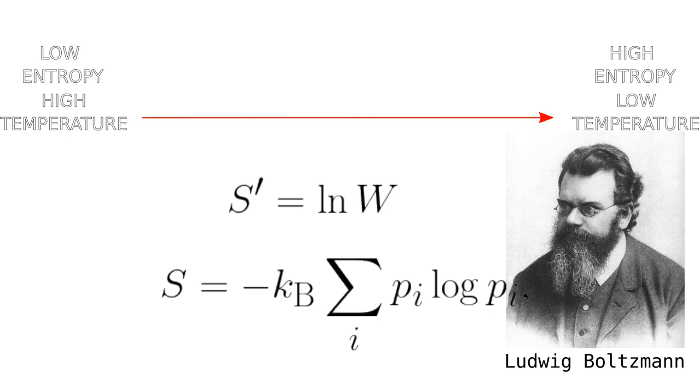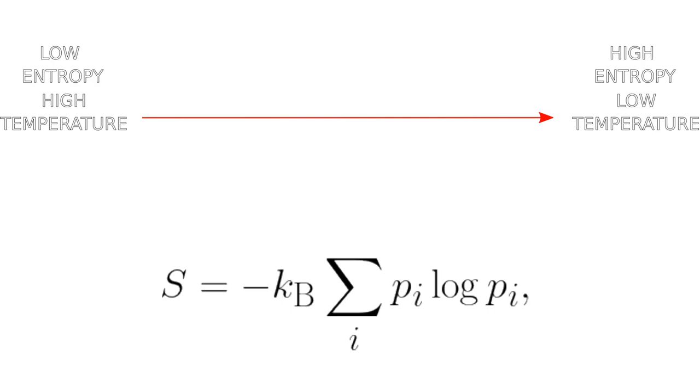For thermodynamics and its second law, the concept states that energy tends to flow from high temperature to low, that is from low entropy to high. Boltzmann's entropy formula is the probabilistic definition of this equation based off the number of states. In his case, corresponding to how the ideal gas reaches equilibrium.